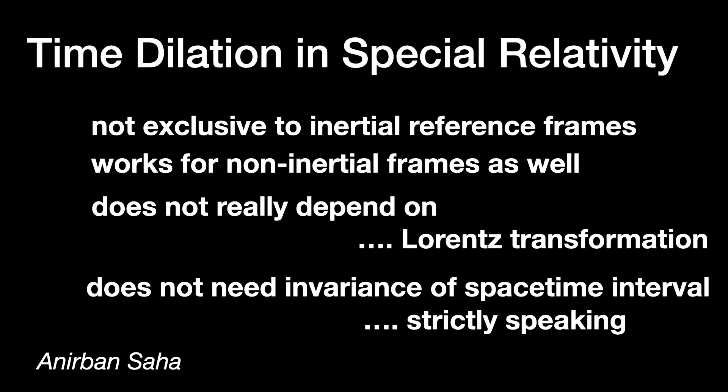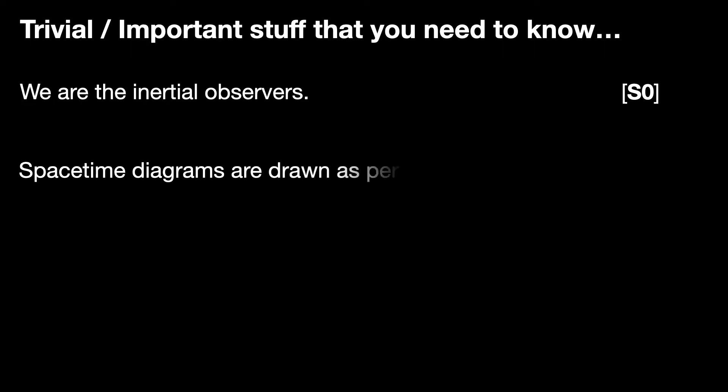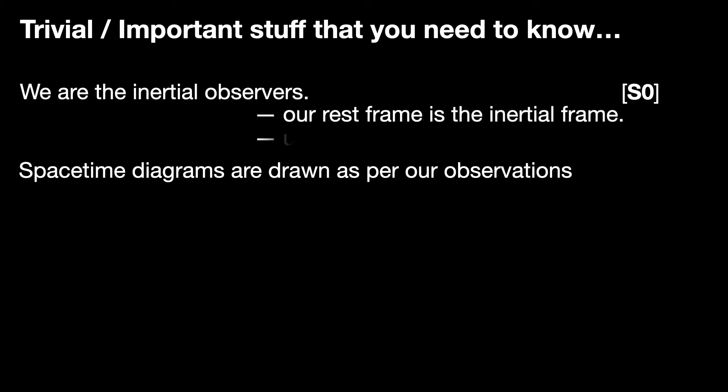Before we begin, let me emphasize some trivial but important, and one non-trivial and very important, concepts about reference frames that we shall require to understand time dilation. The trivial ones: we usually think of ourselves as inertial observers belonging to a reference frame S0, and draw the space-time diagram as per the observations taken from our frame. When I say 'we observe,' I mean observations made from this S0 frame using its space-time coordinates. When I say velocity of a person or an object, I mean velocity with respect to our S0 frame. This is standard practice in special relativity — whoever is making a statement does so as per their own rest frame, and unless specified otherwise, we assume this rest frame is inertial in nature.